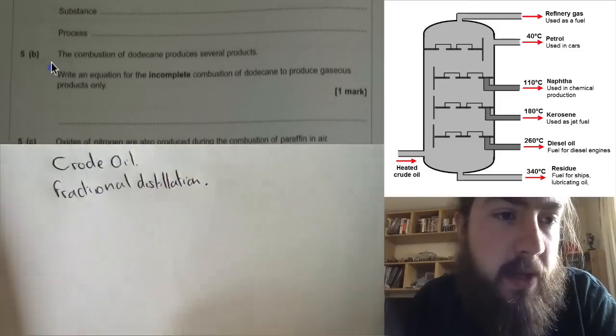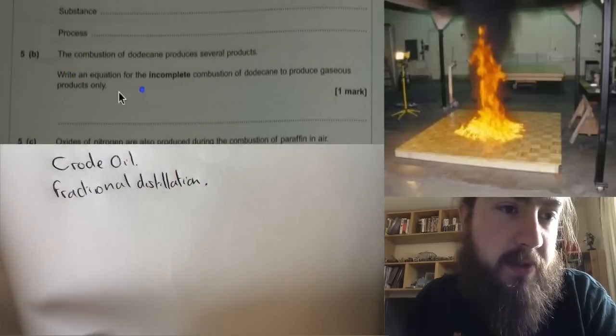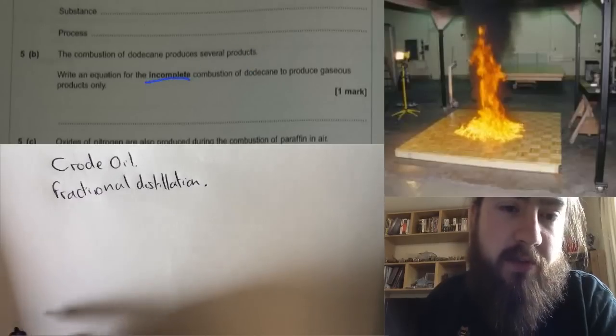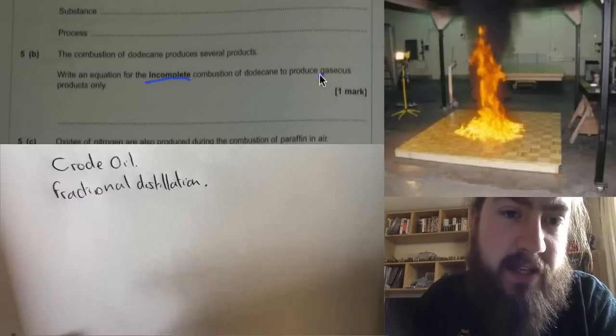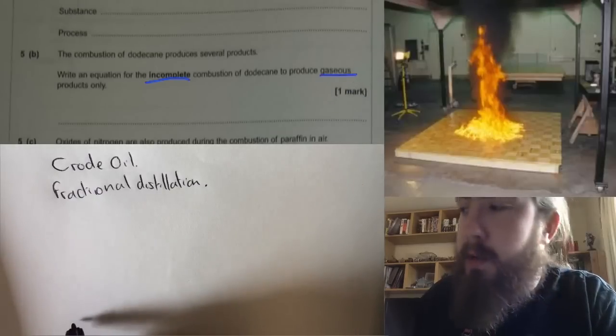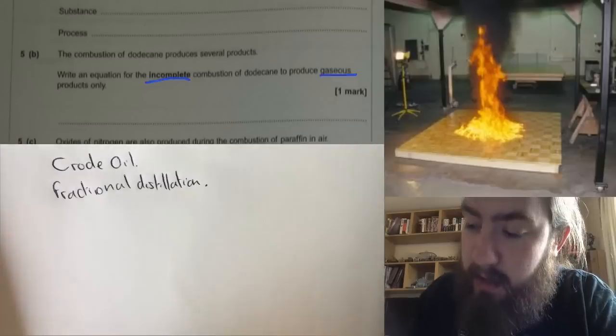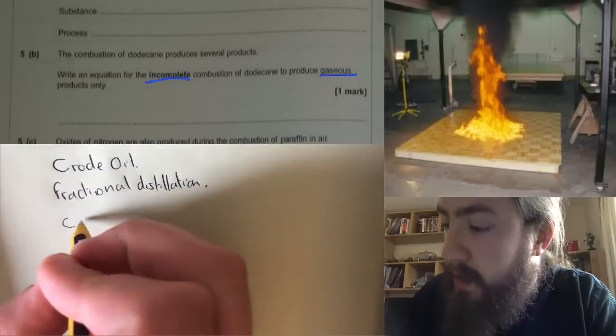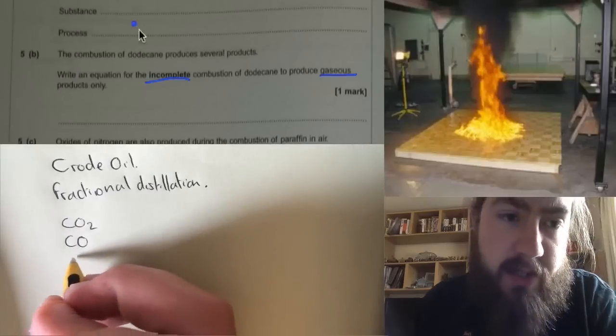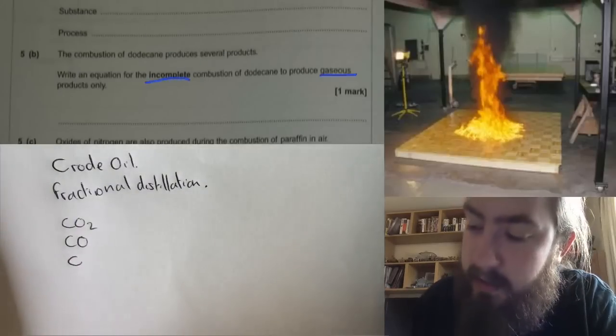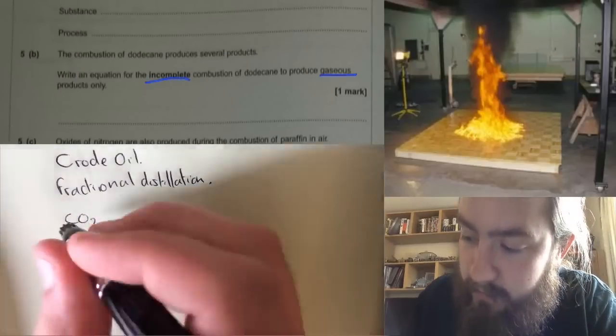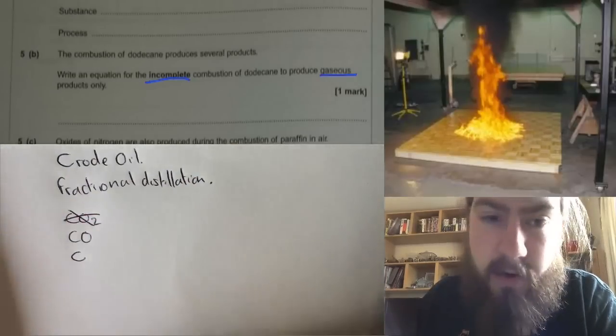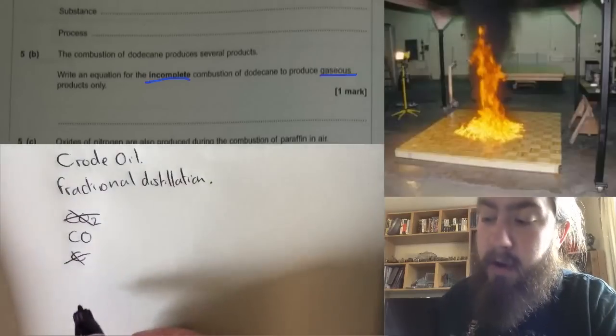5b. The combustion of dodecane produces several products. Write an equation for the incomplete combustion of dodecane to produce a gaseous product. When you combust something there are three things that you can make: carbon dioxide, carbon monoxide, or carbon. In the question they said it's incomplete, so that rules out carbon dioxide, and it must be a gas, which rules out carbon. So we're going to be looking at carbon monoxide.